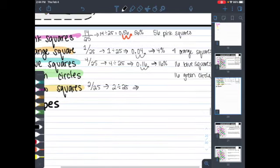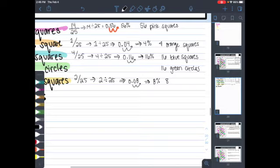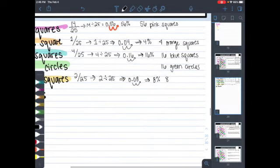Move the decimal over two times. 8%. And now I know that I will have 8 yellow squares.